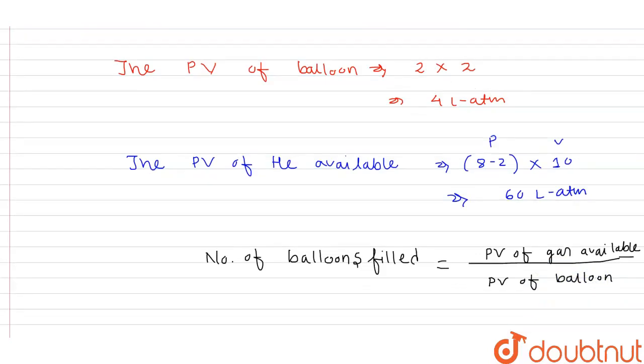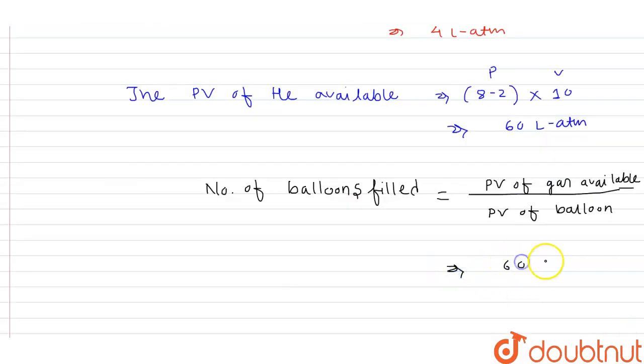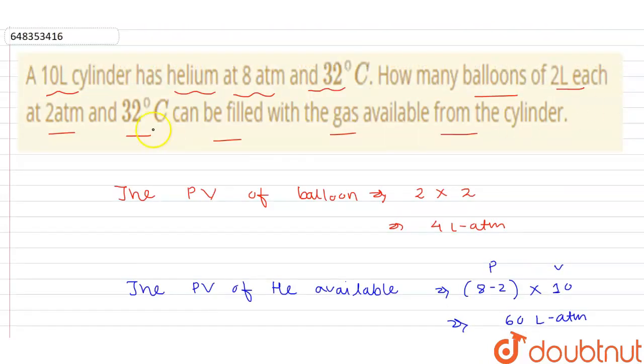So PV of gas available, you can see, that is 60 liter atm, and PV of any balloon is given 4 liter atm. So this unit will be cancelled down, and number of balloons filled we can easily calculate, that will be 15. So how many balloons can be filled? 15 balloons can be filled with this data. Thank you.